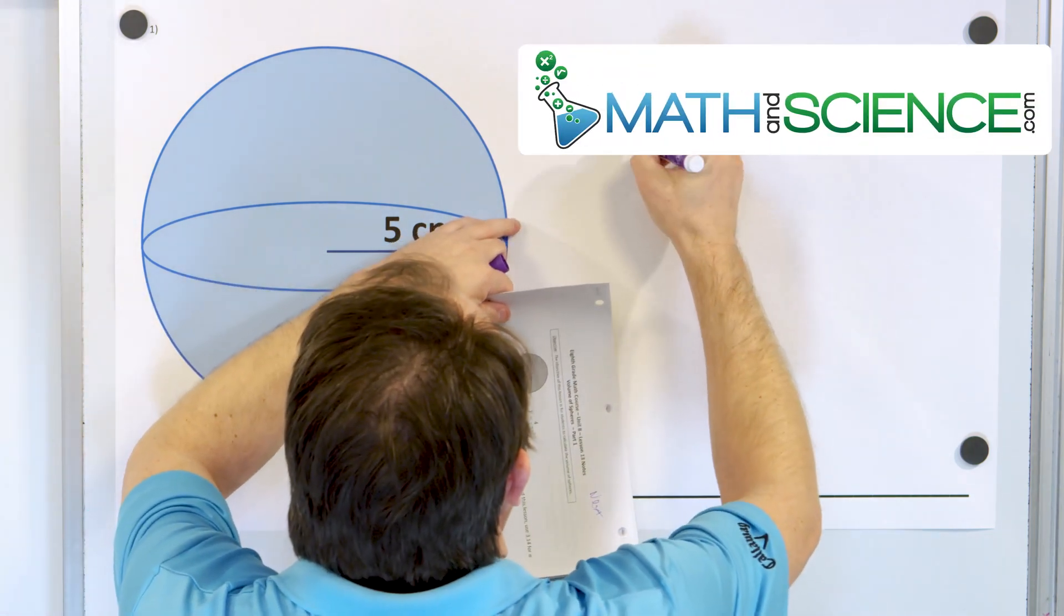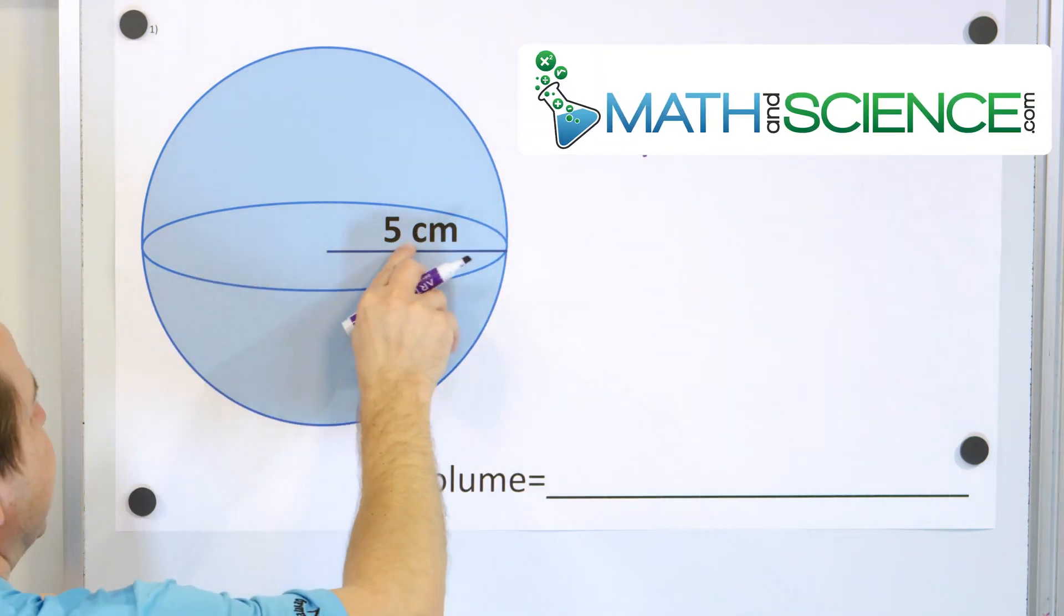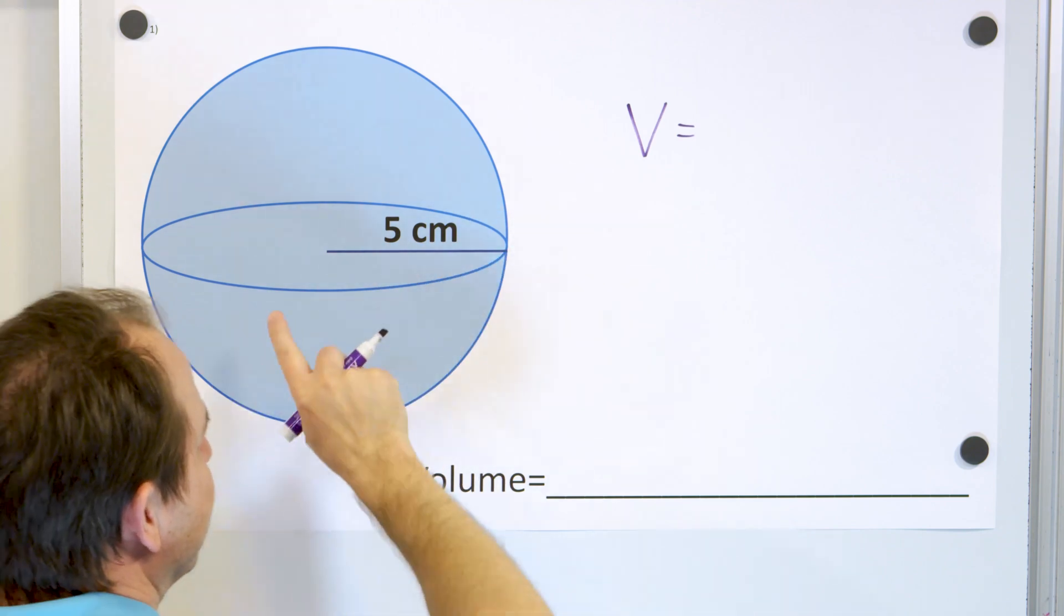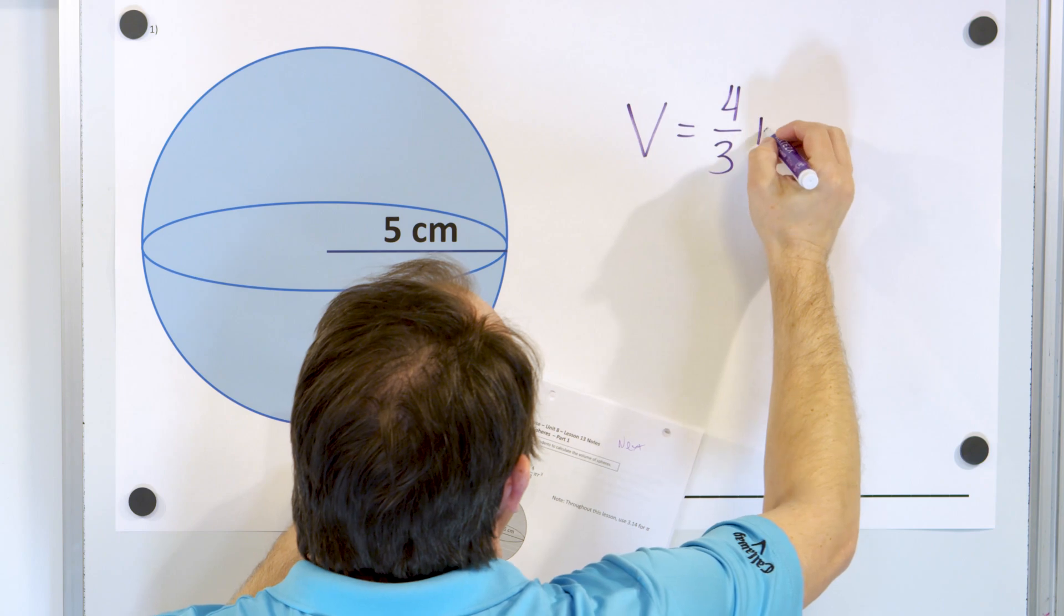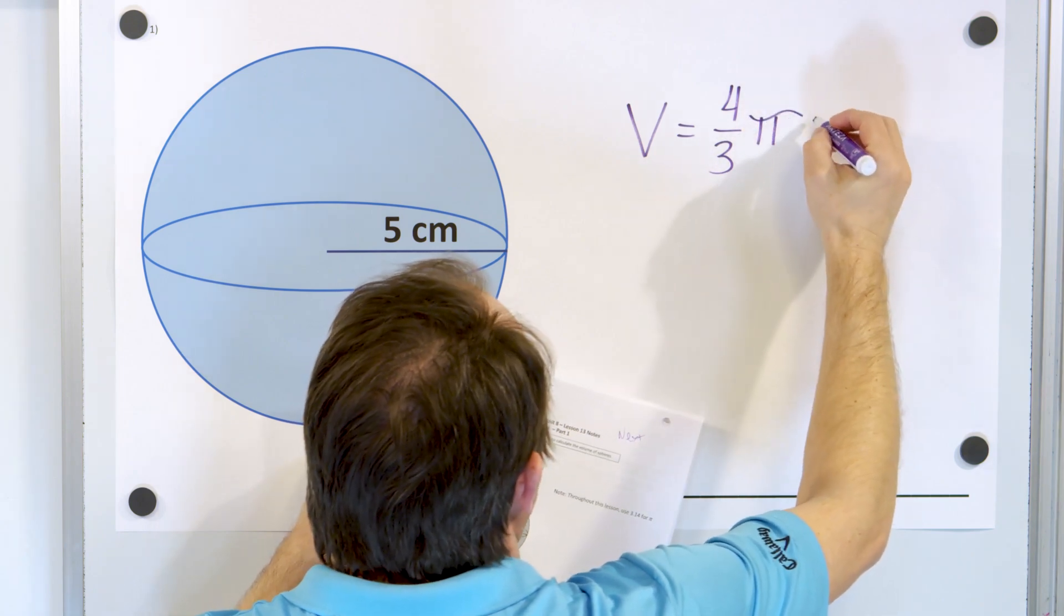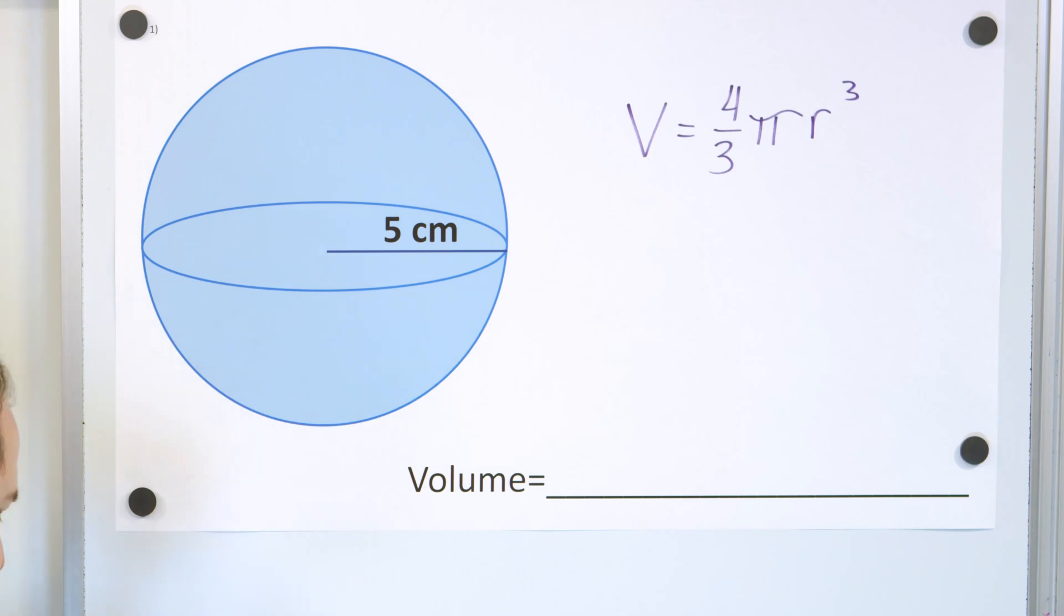So the volume of any sphere with a radius here, in this case the problem is 5, but it's a radius r, is the following: 4 thirds times pi times r cubed.